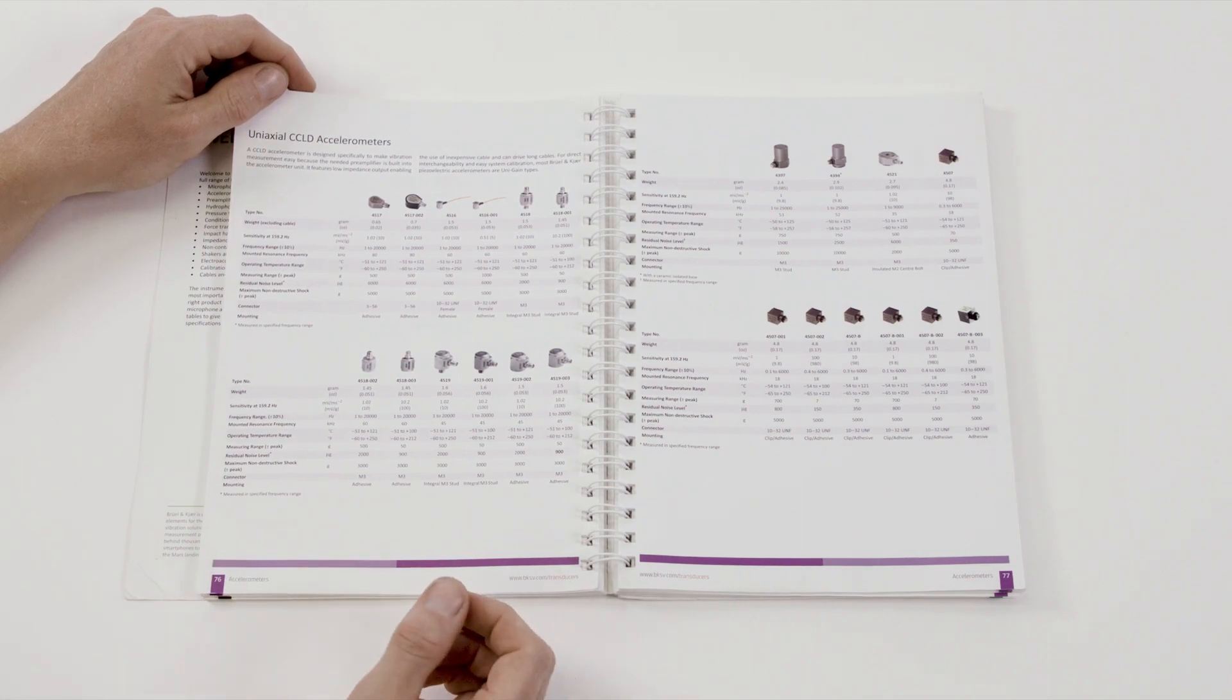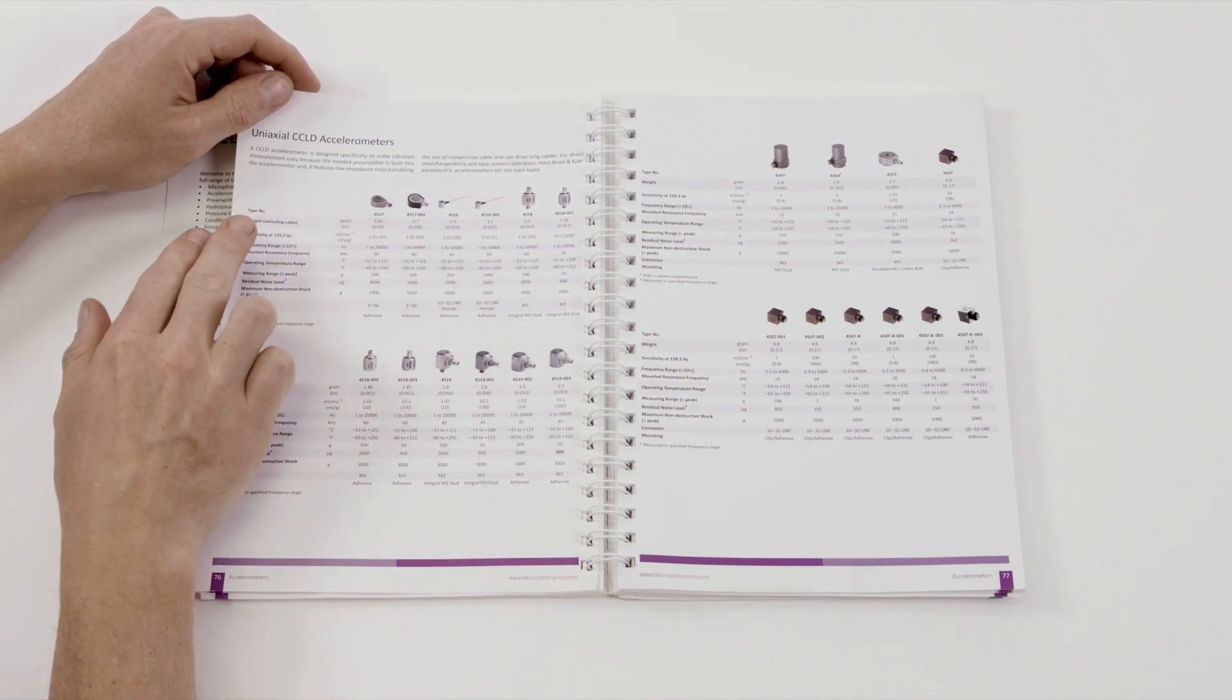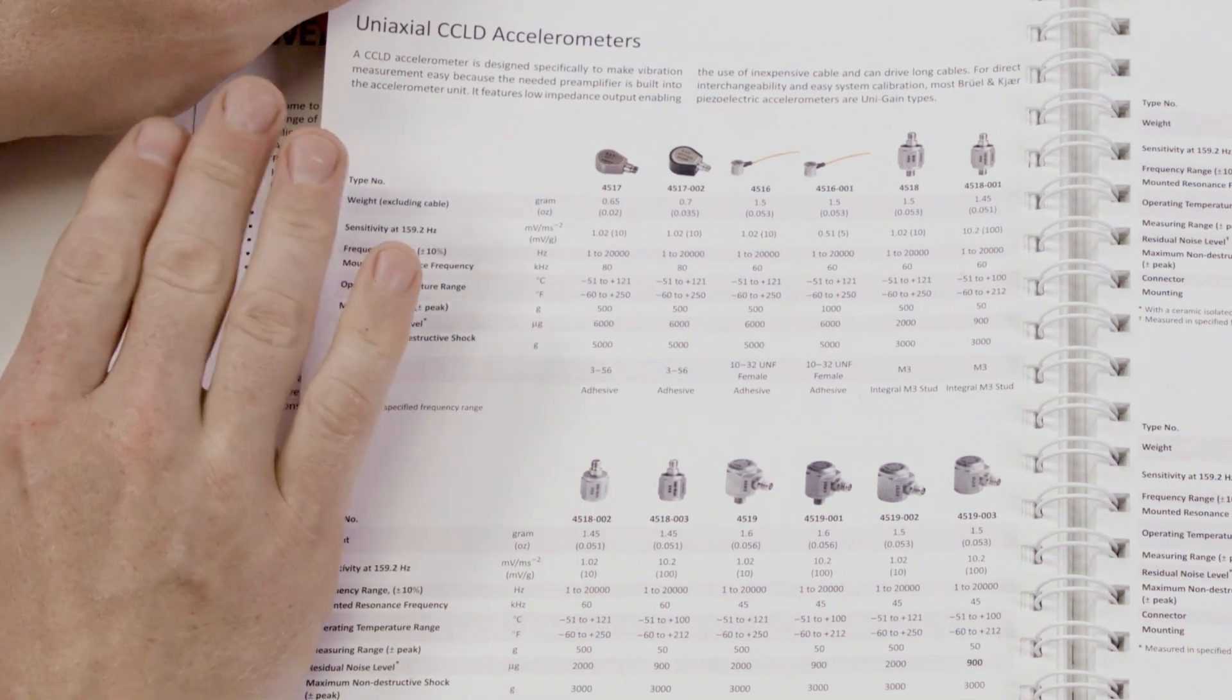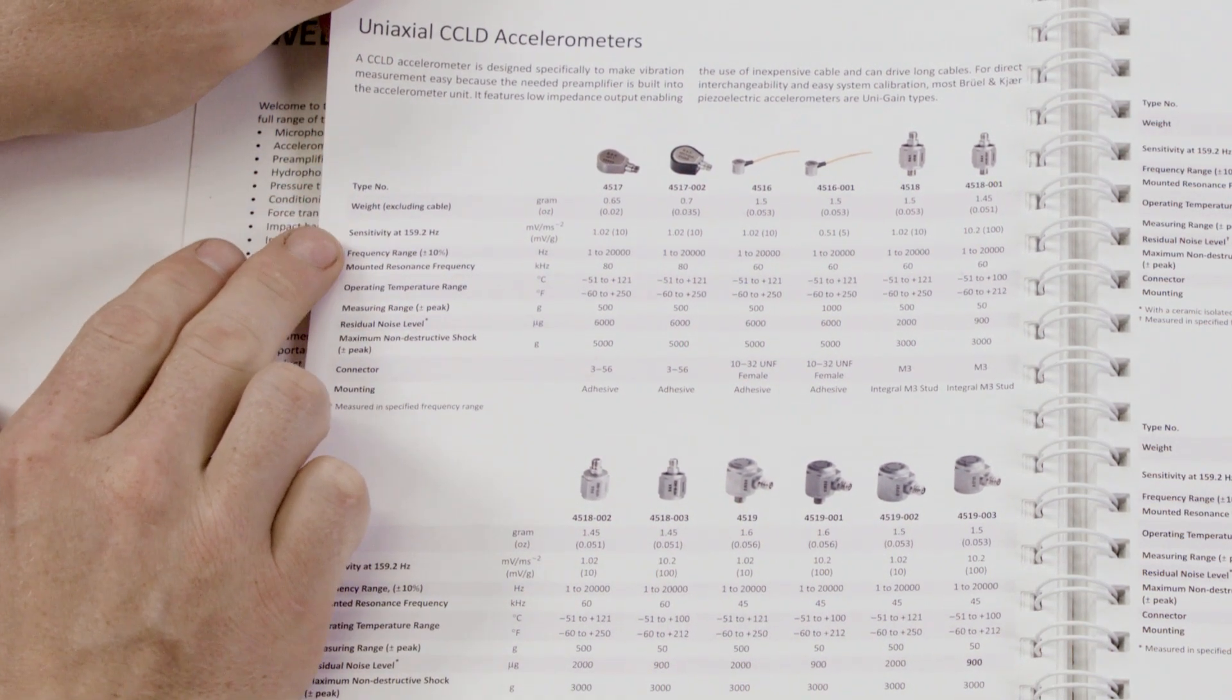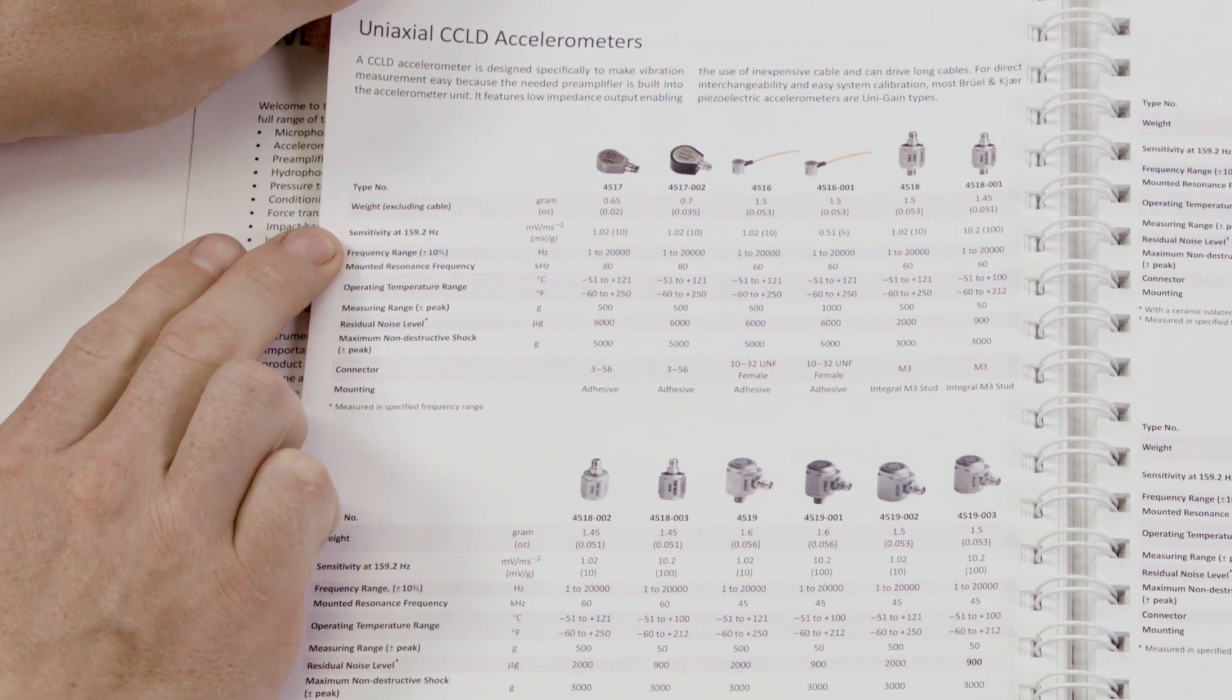So in the Bull & Care catalog of transducers, we have specifications for uniaxial CCD accelerometers, for example, weight and sensitivity to be considered.